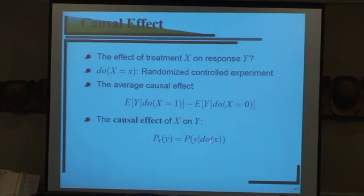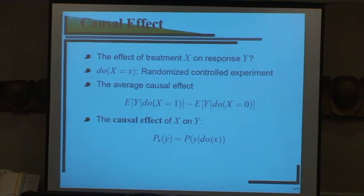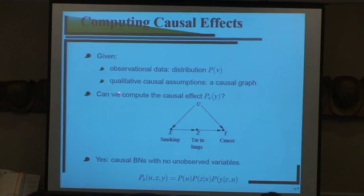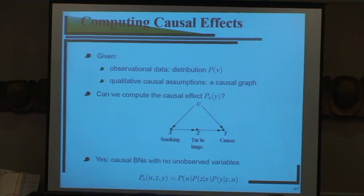This post-intervention distribution is still a valid distribution on Y, indexed by X. In the framework of Causal Bayesian networks, inferring causal effects means: given observational data and qualitative causal assumptions represented as a graph, can we make predictions about causal effects? If all variables in the network are observed, then yes, we can make those predictions.